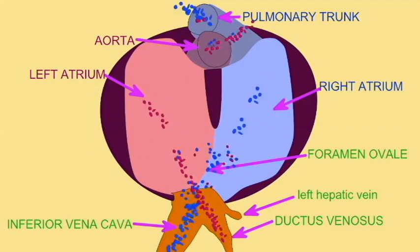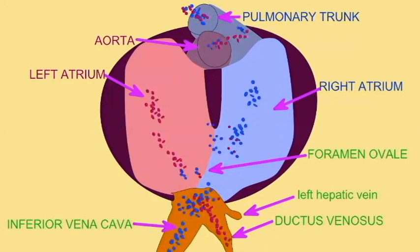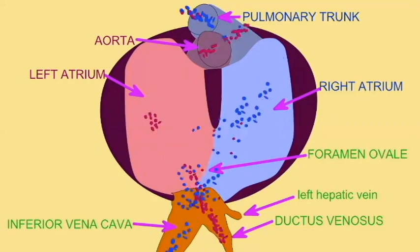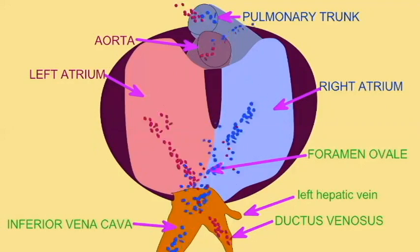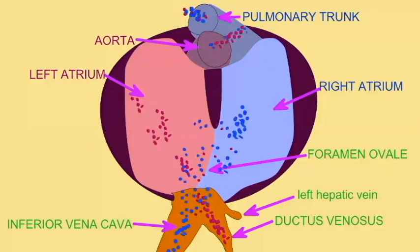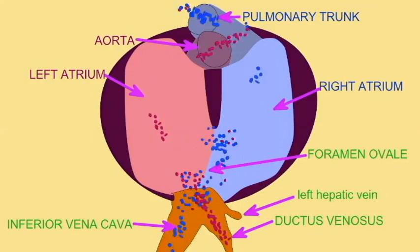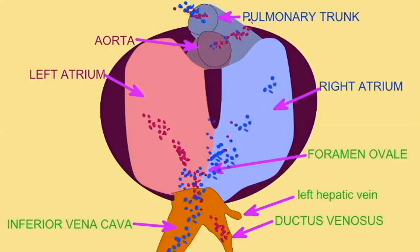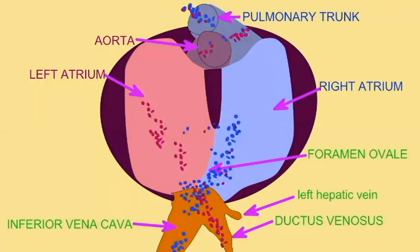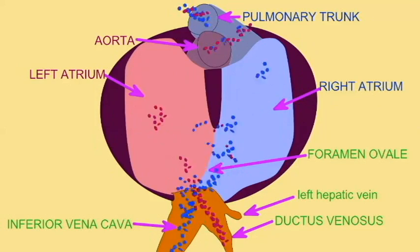The ductus venosus, carrying oxygenated blood from the umbilical vein, and the left hepatic vein, which is largely oxygenated, fuse with the inferior vena cava very close to where it joins the right atrium.